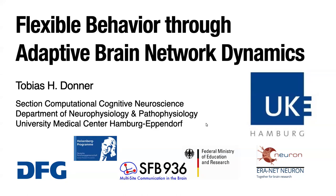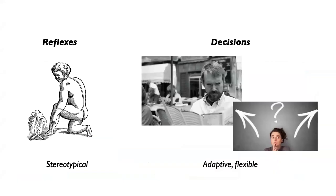My lab studies the mechanisms of adaptive cognitive behavior, primarily in the human brain. Our decisions differ fundamentally from reflex behaviors in terms of their flexibility — continuously adjusting to a changing context in which all behavior unfolds, and that really sets them apart from more stereotypical forms of behavior. This flexibility at the level of behavior emerges from a continuous reconfiguration of highly task-specific pathways.